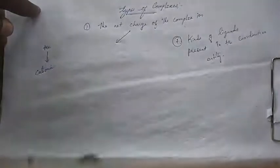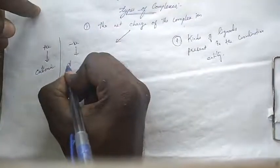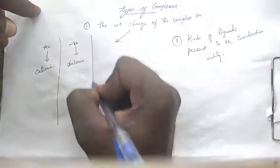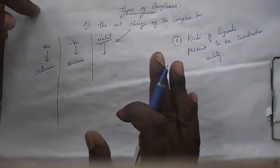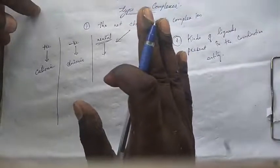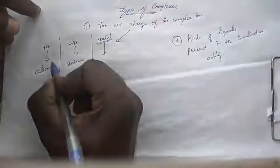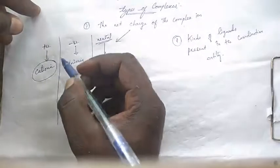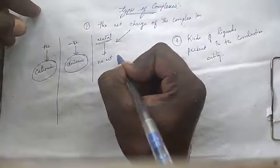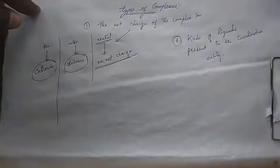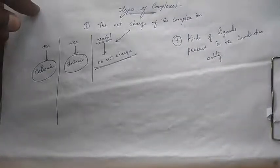Based on the net charge of the complex ion: if the net charge is positive, it is called a cationic complex ion. If the net charge is negative, it is called an anionic complex ion. If the net charge is neutral, it is called a neutral complex.